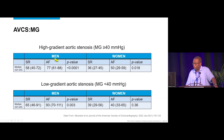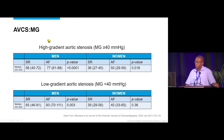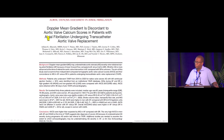This was true in men with high-gradient AS, in women with high-gradient AS, and in men with low-gradient AS. The difference was not seen in women with low-gradient AS. Overall, the aortic valve calcium score is much higher for the same mean gradient in patients with AFib compared to sinus rhythm.